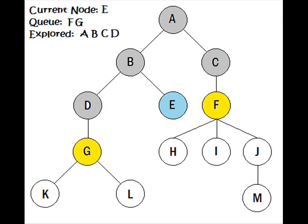Continuing to the right, our current node is E. We won't be adding any node to the queue since node E has no children. Now visiting F, we put H, I, and J into the queue, since they are all child nodes of F.